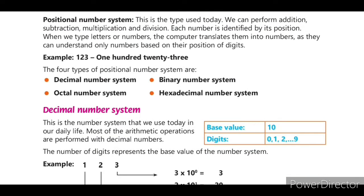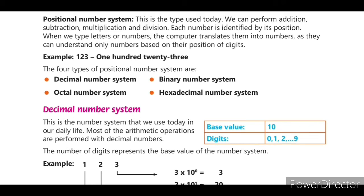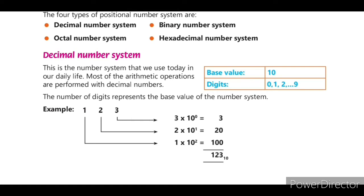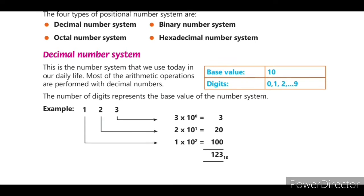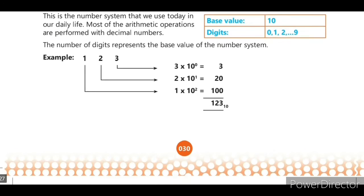The decimal number system has a base value of 10 and digits from 0 to 9. Most arithmetic operations are performed using this decimal number system. It should always be represented with a base value of 10.